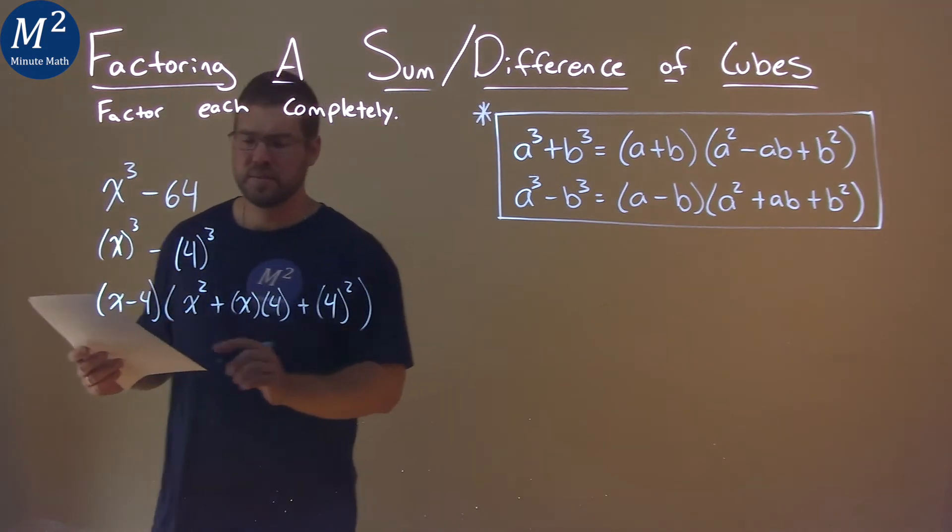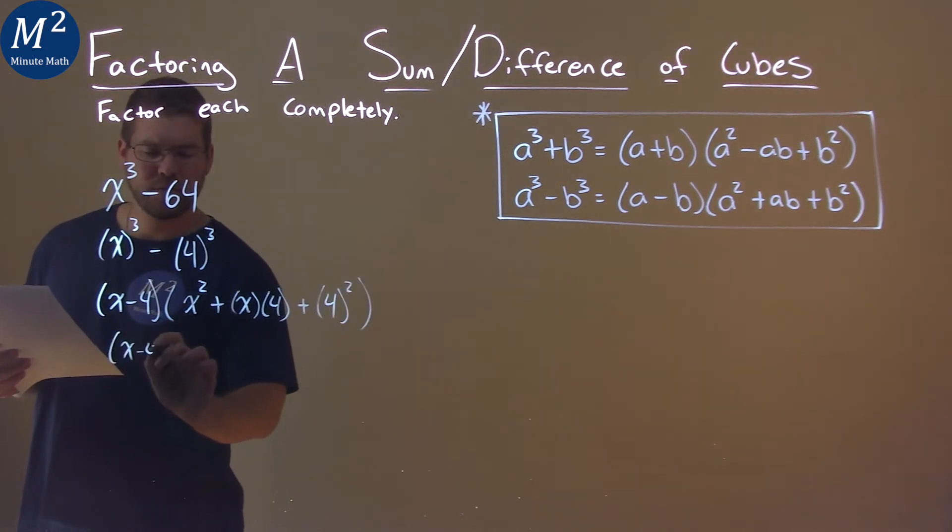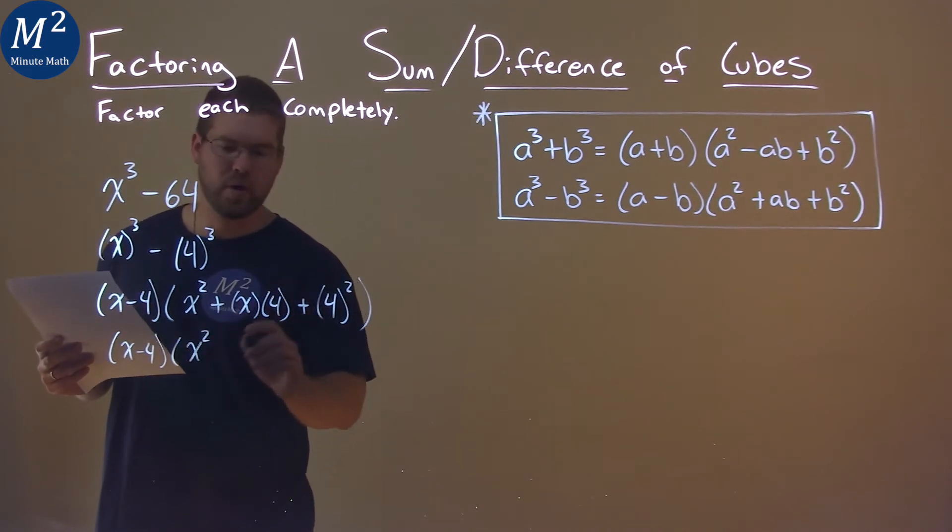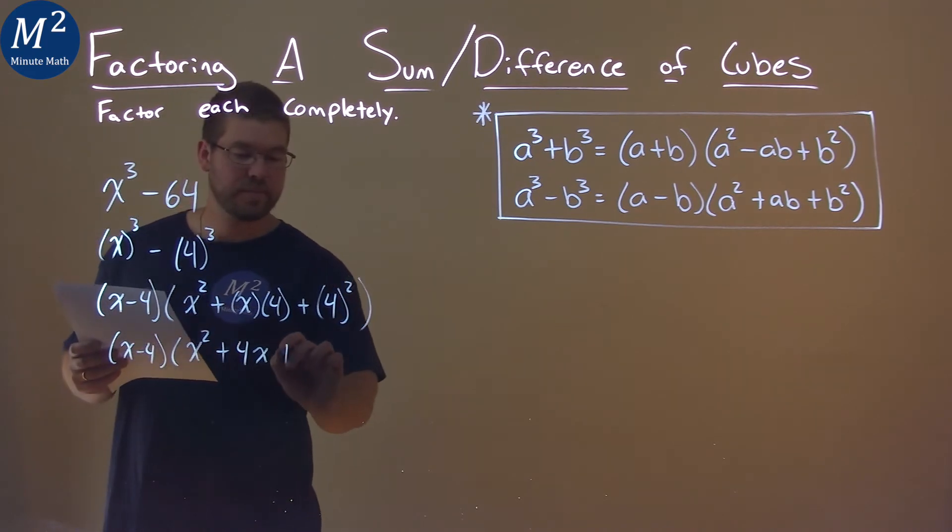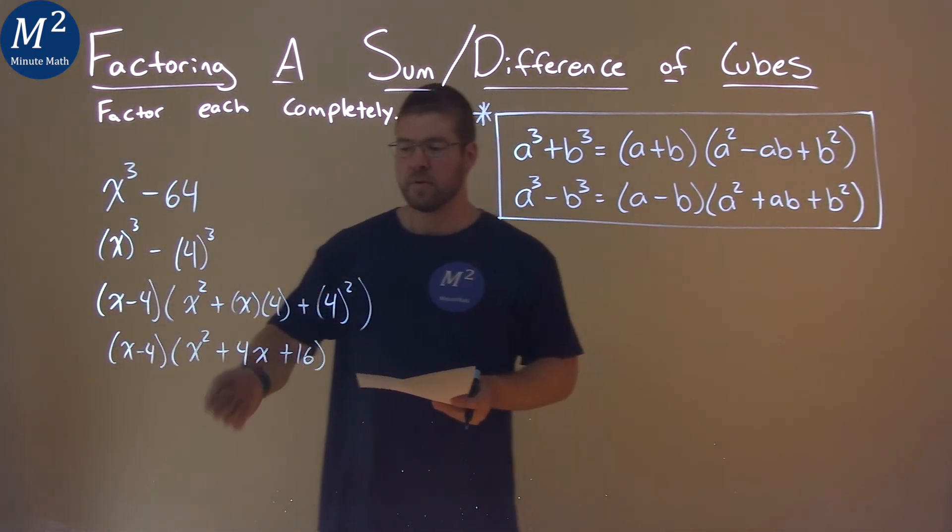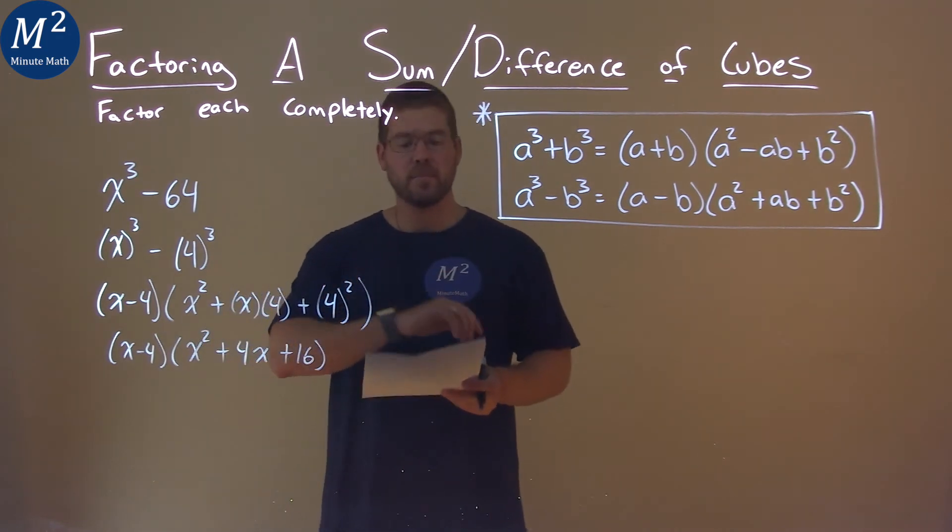Then from there, let's go simplify. Well, the x minus 4 just comes down, but the x squared stays there, x times 4 would be 4x, and 4 squared is 16. And so our final answer here is just x minus 4 times x squared plus 4x plus 16.